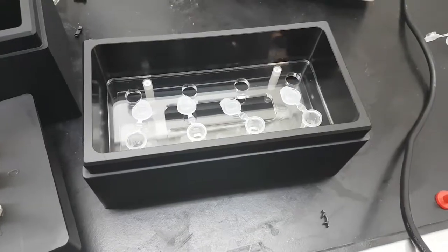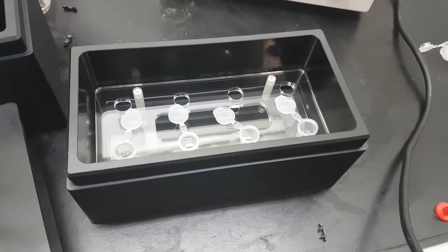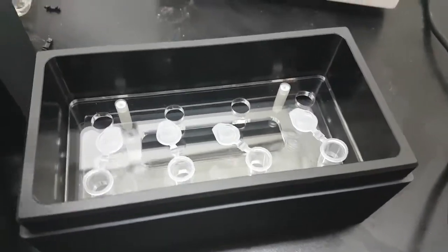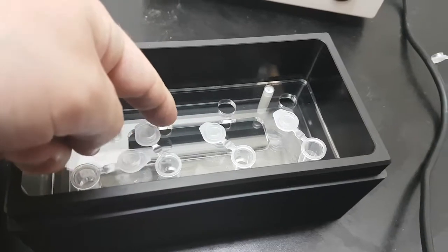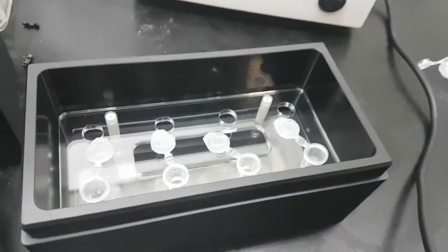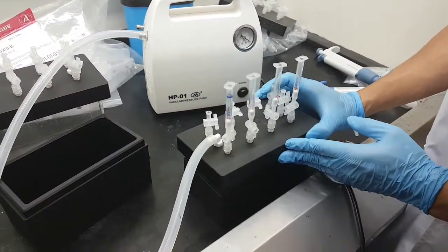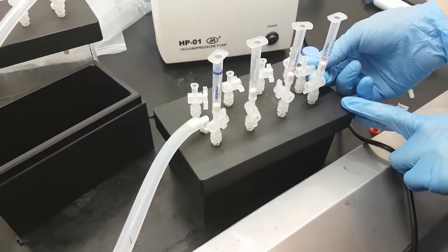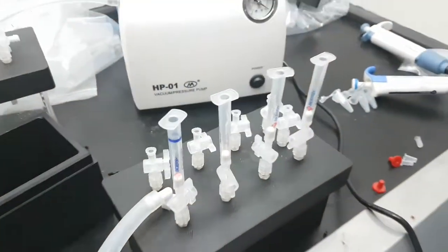Now we will place 2ml centrifuge tubes into the cover. Make sure these tubes are not touching each other, not to make it this way but to make it this way. Place the elution cover. Make pressure again.